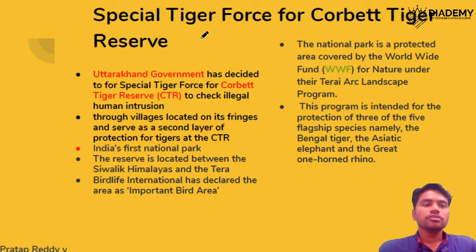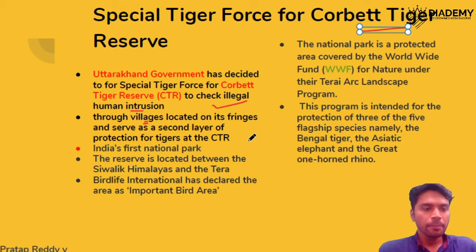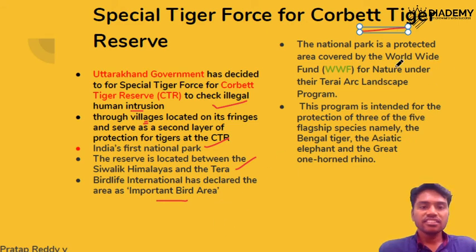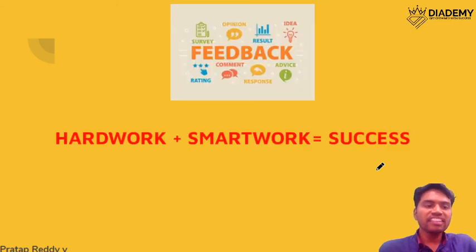Jim Corbett Tiger Reserve is getting a special tiger force. The Uttarakhand government decided this to check illegal human intrusion from surrounding villages in and around the area. Please remember this tiger reserve is the first national park in India and is located in the Shivalik Hills and Terai region. It has been recognized as an important bird area and is covered under the WWF program called the Terai Arc Landscape Program, which is intended to protect three of the five key species: tiger, Asiatic elephant, and the great one-horned rhino.